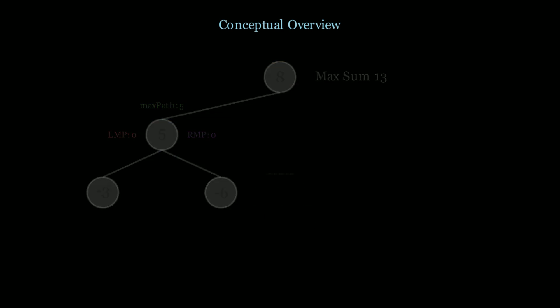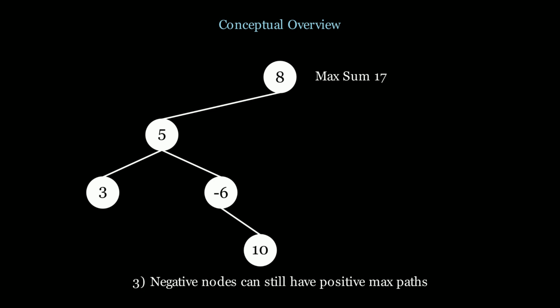In this next example we have nodes 8, 5, 3, negative 6, and 10. The maximum path here is 17. From node 5's perspective we're taking the path through negative 6 and 10. But I just said you shouldn't take a negative path — however, taking negative 6 here is not a negative max path. We're taking negative 6 plus 10, which is positive 4. It's not that we don't take negative values, it's that we don't take negative paths. So in this case it's best to take negative 6 and 10 because that's positive 4, and 5 plus 4 is 9 — that's the max path at node 5.